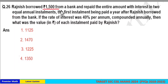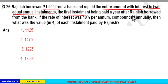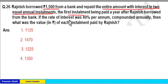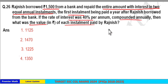Rejinesh borrowed 1500 from a bank and repaid the entire amount with interest in two equal annual instalments. The first instalment was paid a year after Rejinesh borrowed from the bank. The rate of interest was 40% per annum compounded annually. What was the value of each instalment paid by Rejinesh?